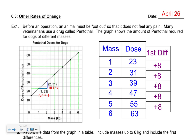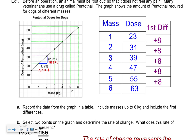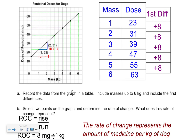Hopefully you got a first difference of 8 every time. That's just the first part. The rise and run here reflects the next question. We recorded the data from the graph on the table with masses up to six and included the first differences — that's what we're doing.